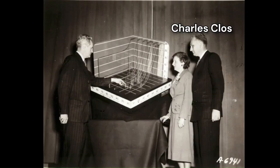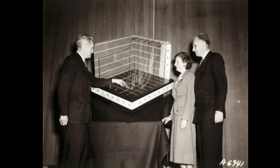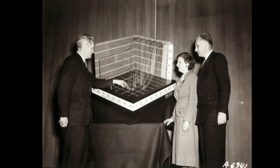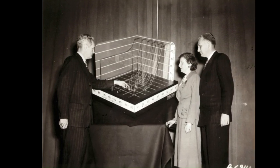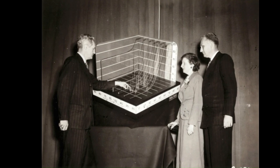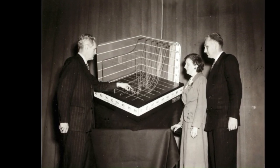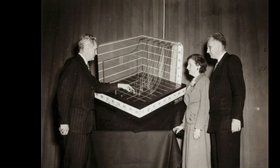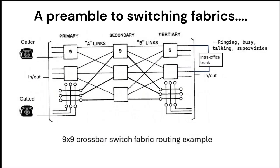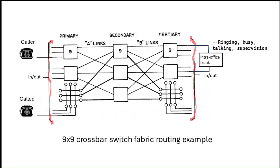In 1952, Bell Labs engineer Charles Clough provided rigorous mathematical methods to build any size crossbar fabric made of smaller switches. His work is still used by modern-day network engineers. Next, an example of call routing using a basic 9-input, 9-output crossbar fabric made up of nine smaller 3x3 switches.